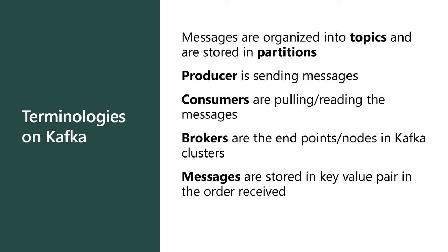A producer is someone who's sending a message. A consumer is someone who's polling or consuming the message. Messages are not pushed out automatically — you poll for them. Brokers are endpoints which you connect to, and there can be multiple brokers in a Kafka environment. You can ask for a broker and it gives you the list of brokers and topics, and you can connect to the topic from your consumer or producer side. Messages are stored as key-value pairs — a key identifying who you are and what type of message, with the body in the value, and a timestamp that keeps sequence ordering even across multiple partitions.